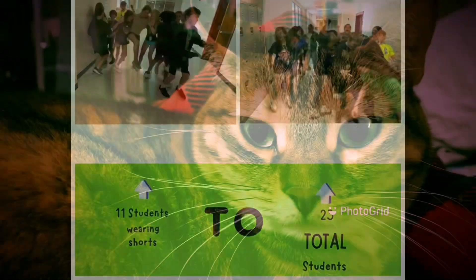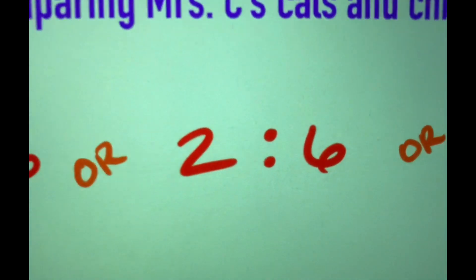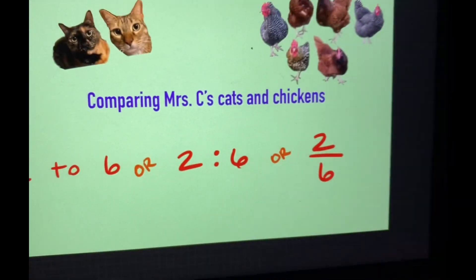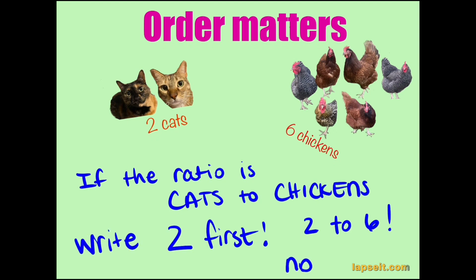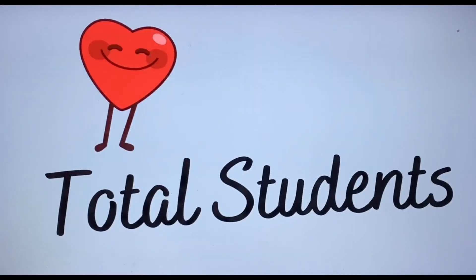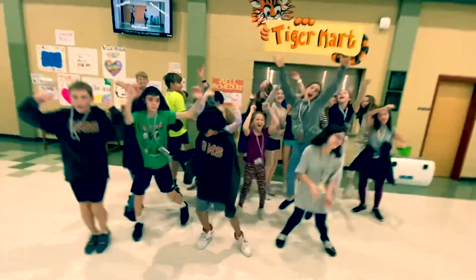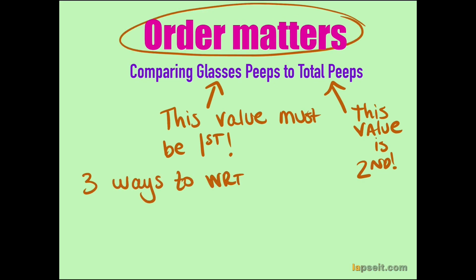Now let's go. Tell me how you write them. Three ways to write ratios — cool, whichever way. Order matters when you write them. Watch what you say. Three ways to write ratios. Write them in three ways. Order matters — write it like you say it, so be careful with what you say.